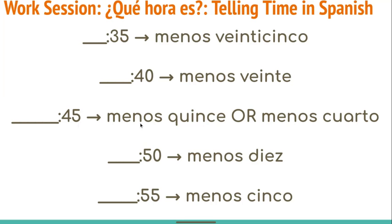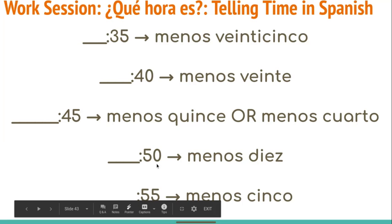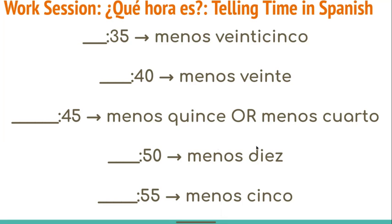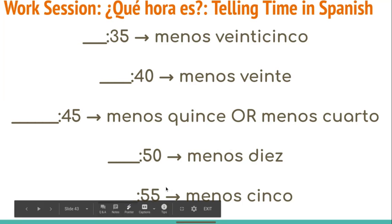For 45, we have two options. We could say menos quince — literally, minus 15 — or menos cuarto, minus a quarter of an hour. For 50: menos diez — literally, minus 10. And for 55: menos cinco — literally, minus five minutes away from that next hour.